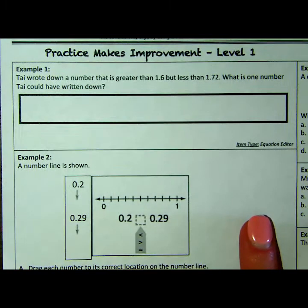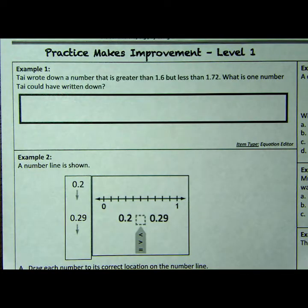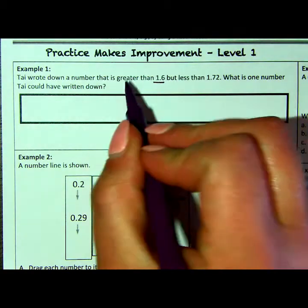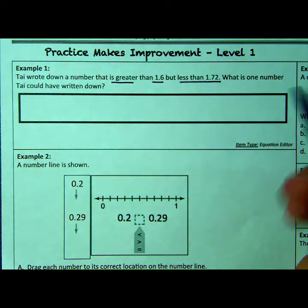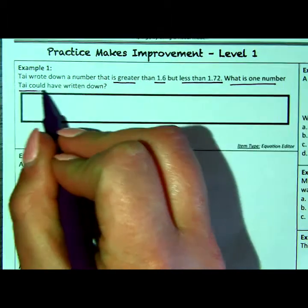So we have here, Ty wrote down a number that is greater than 1.6, but less than 1.72. What is one number that Ty could have written down?